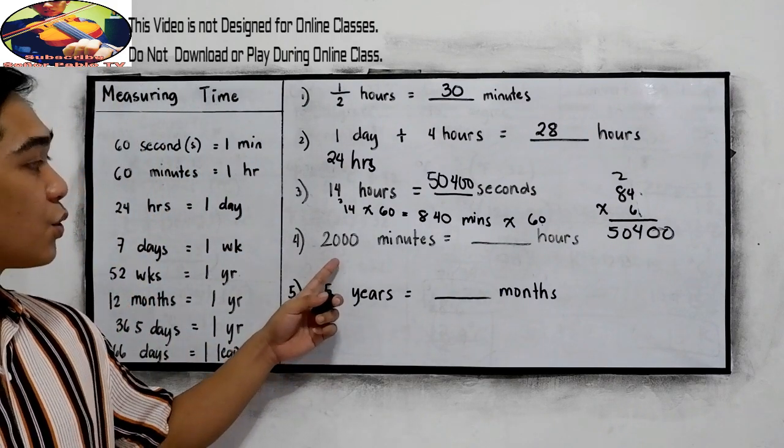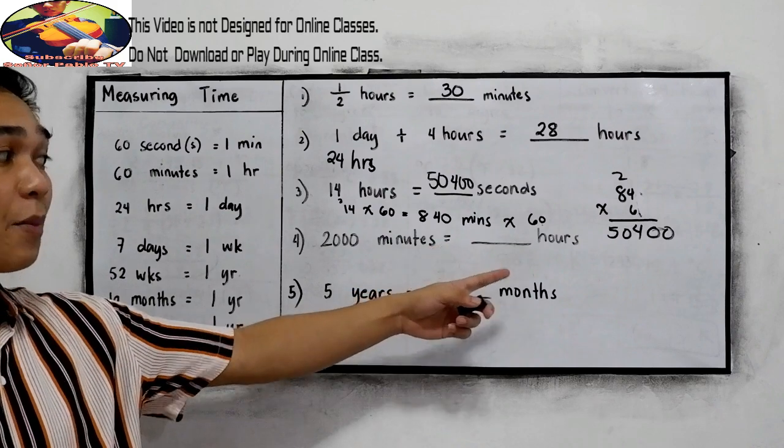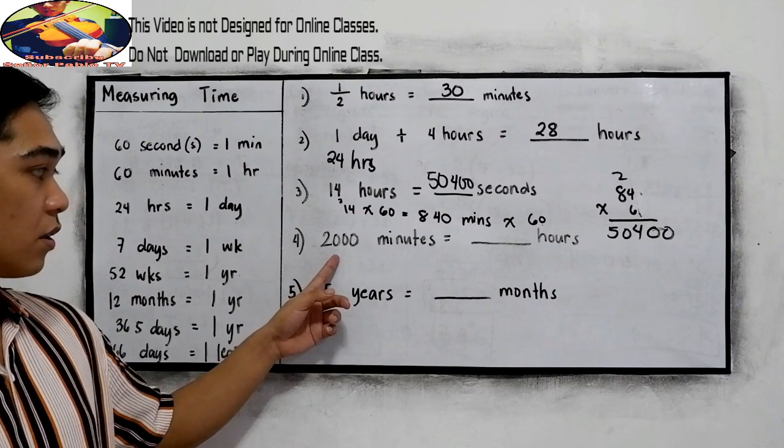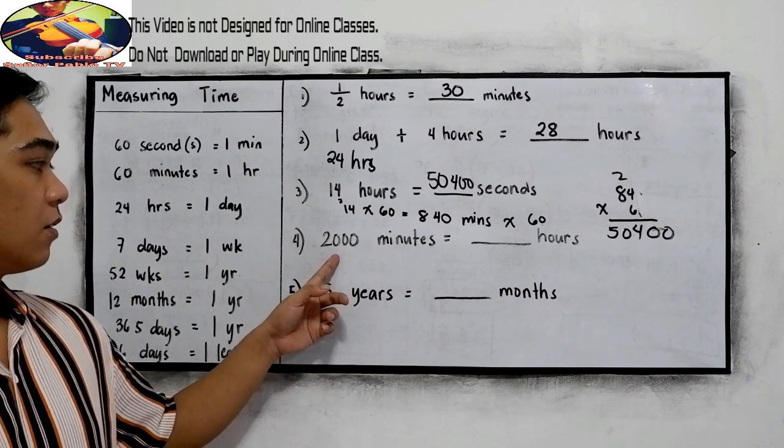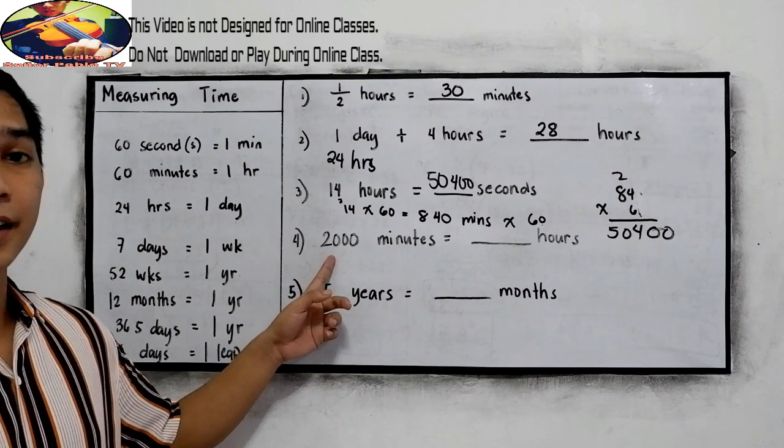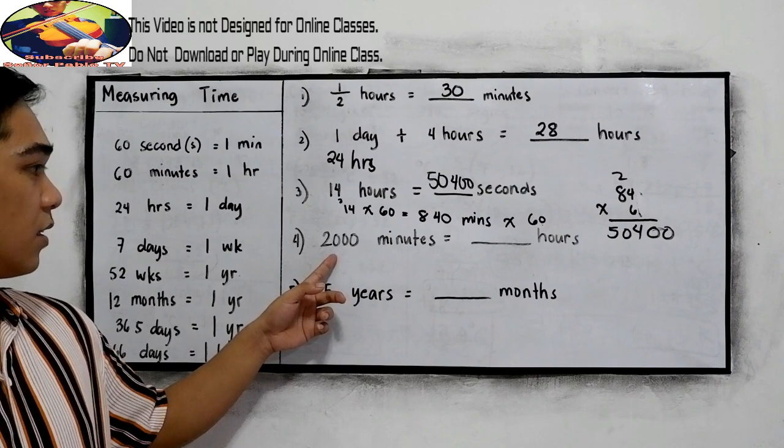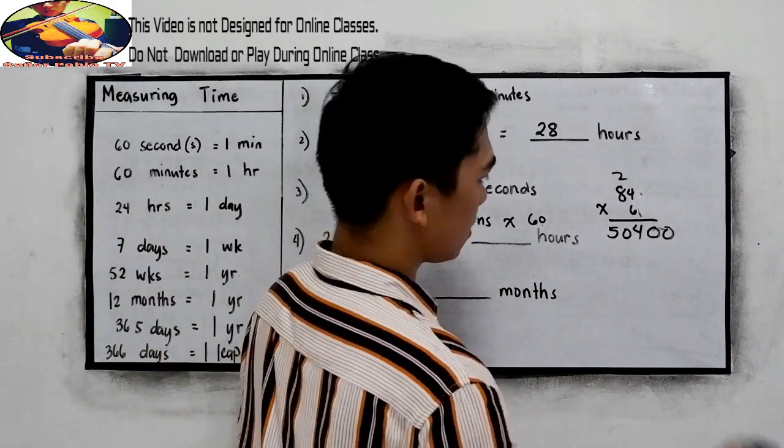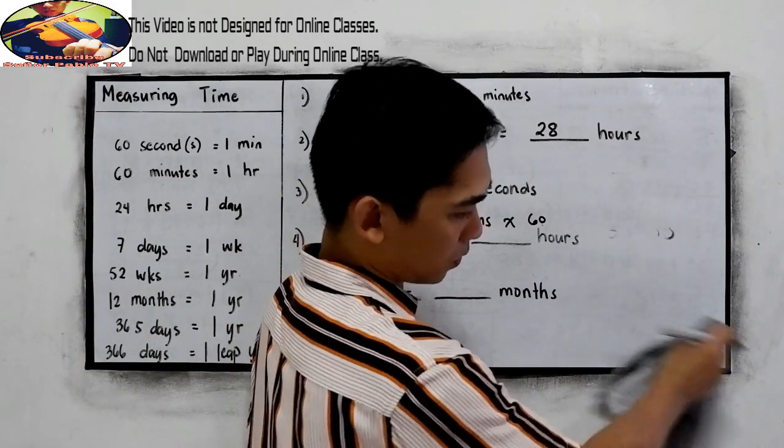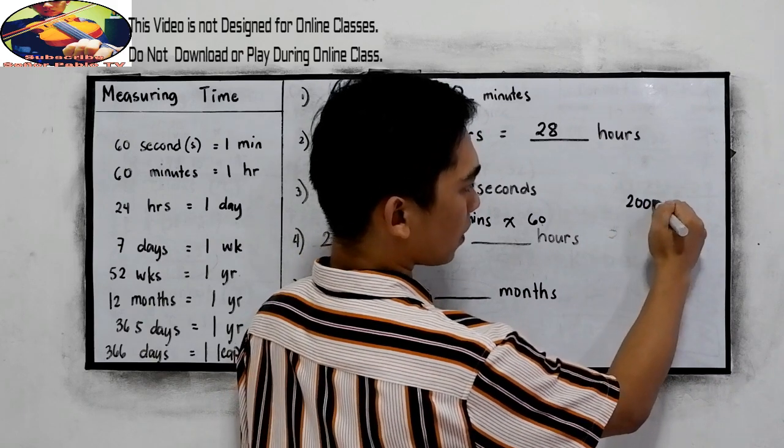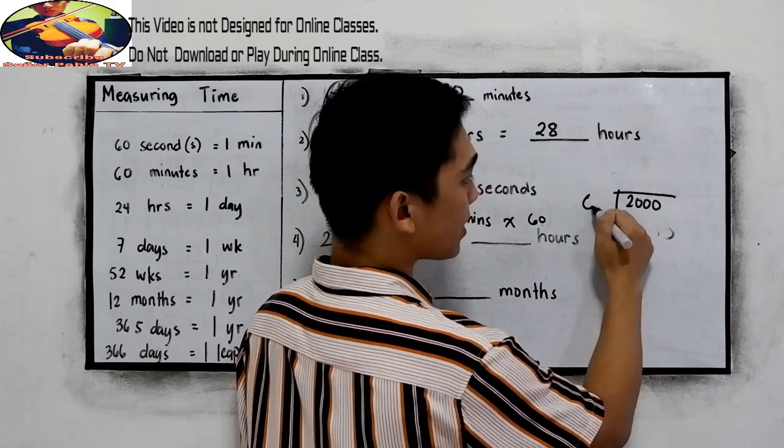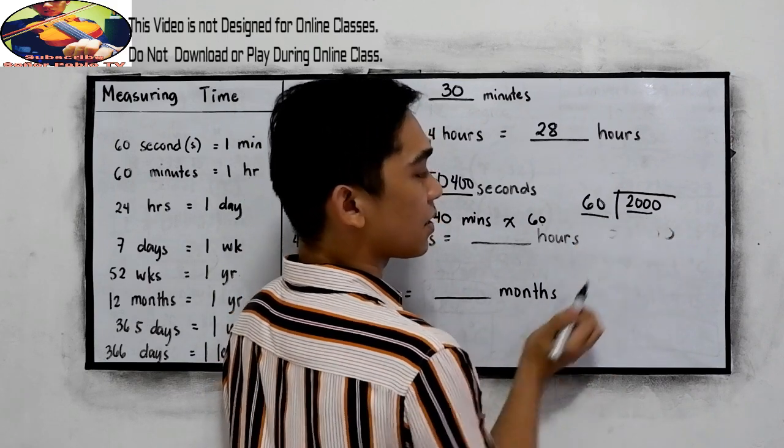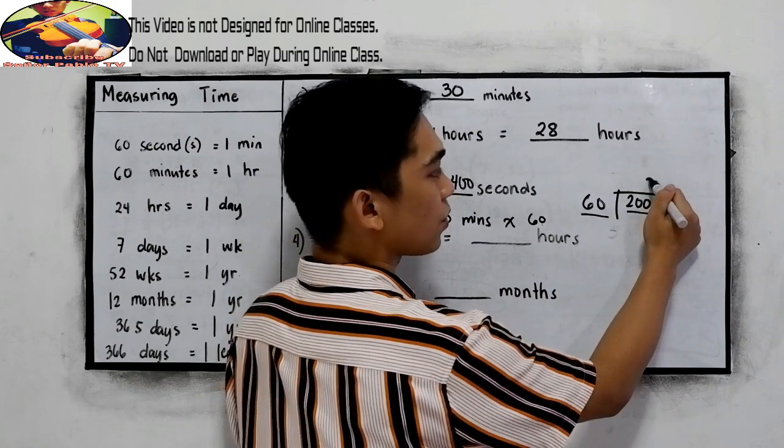Next, 2,000 minutes is equal to how many hours? So we need to divide. 2,000 divided by 60. 6, 12, 18. So 3.